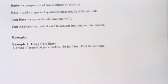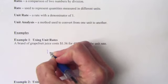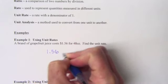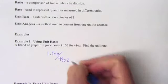So using unit rates. First thing we're going to look at is we have grapefruit juice that cost $1.56 for 48 ounces. We need to find the unit rate. Right now it's just a rate. It's just a general rate, $1.56 for every 48 ounces.